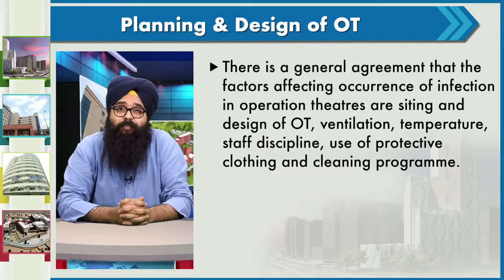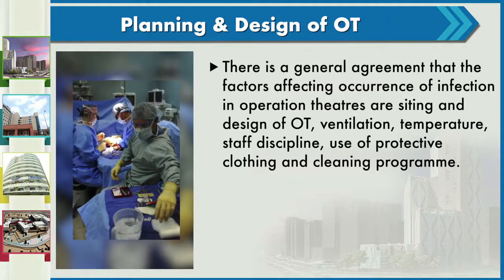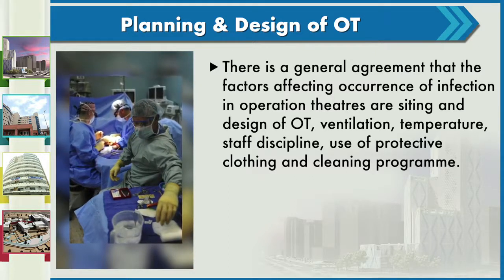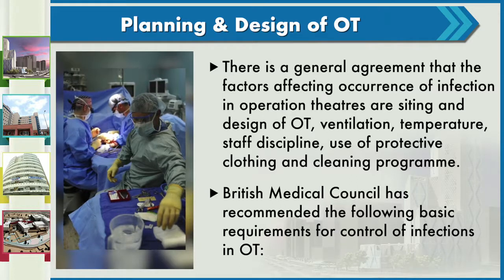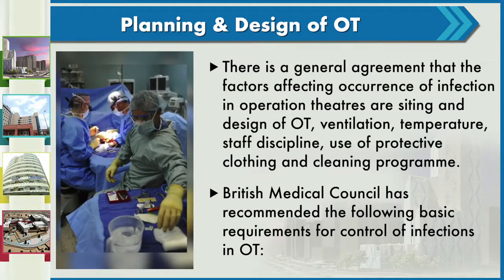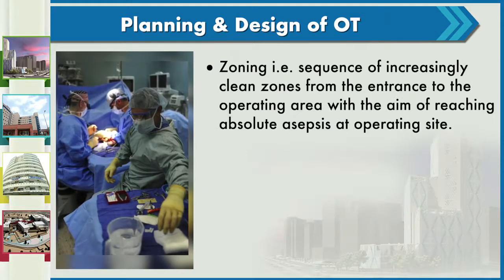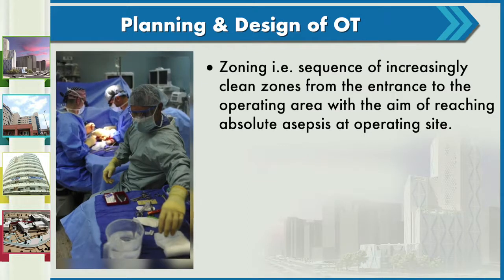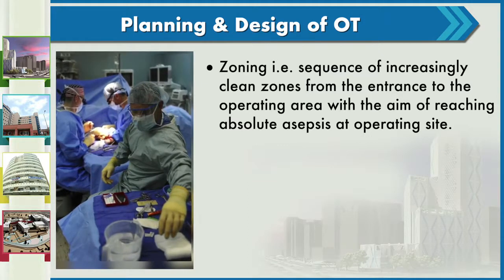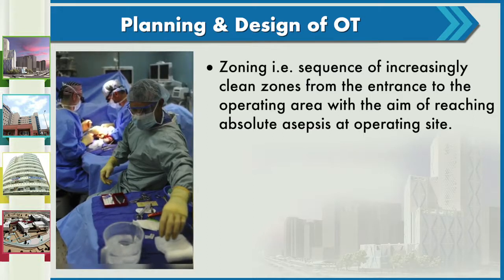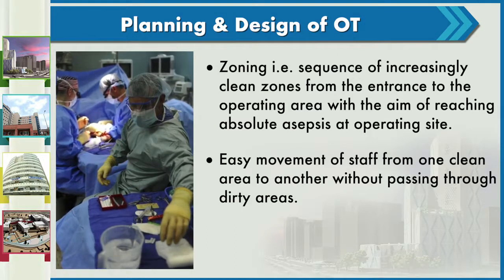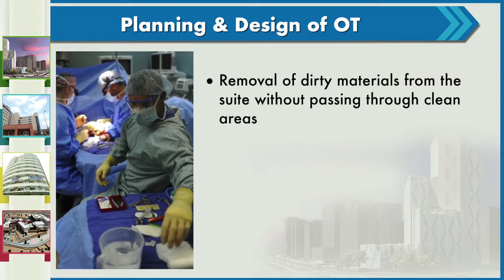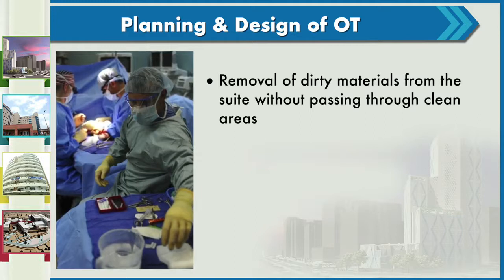Factors affecting occurrence of infection in operation theatres include the design of OT, ventilation, temperature, staff discipline, use of protective clothing, and cleaning program. British Medical Council recommendations include separation from general hospital traffic and air movement, and zoning — a sequence of increasing clean zones from the entrance to the operating area with the aim of reaching absolute asepsis at the operation site. Easy movement from one clean area to another without passing through dirty areas, and removal of dirty materials without passing through clean areas, are also required.